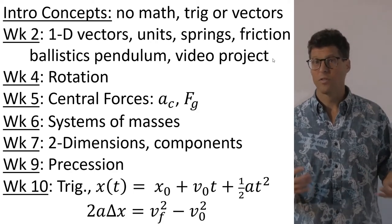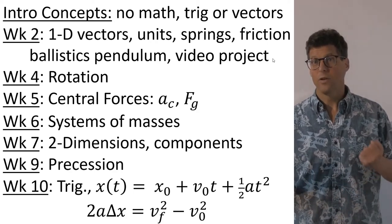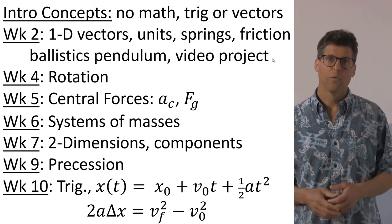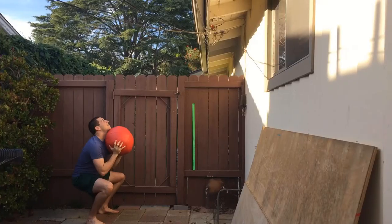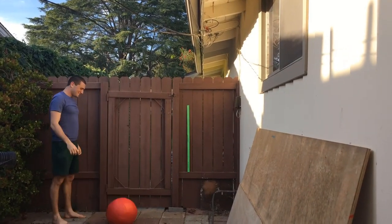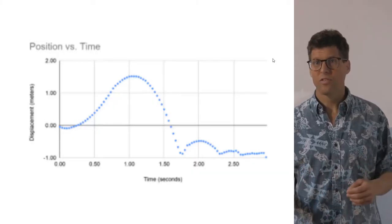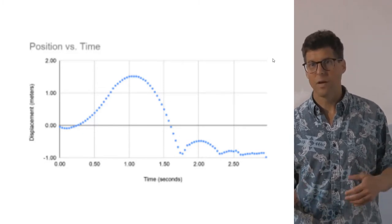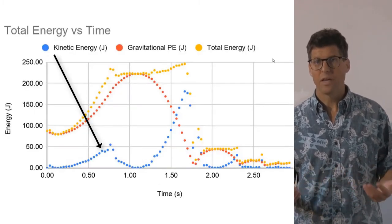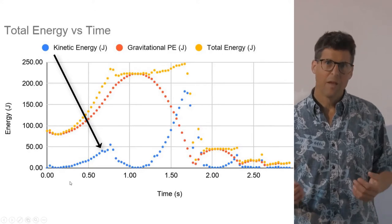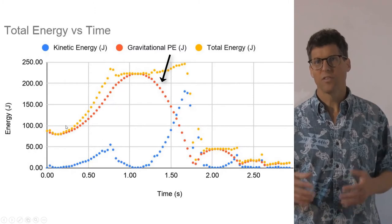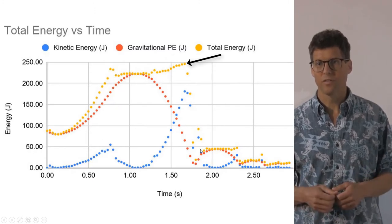The students take a video of themselves doing something strenuous so they can use the video to get the kinematics and calculate the power. So for instance, we want to throw a heavy ball into the air. Software can extract the position versus time data, and from this we can calculate the velocity and the acceleration. From the velocity, we can calculate the kinetic energy, and from the position, we can calculate the potential energy.